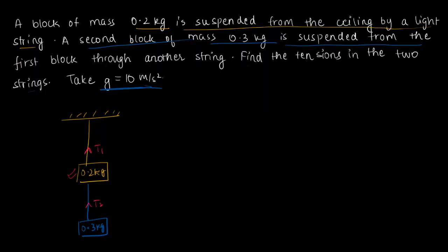Now if you take the first block and magnify it a bit, on this 0.2 kilograms block you have a force T1 acting that's stretching the first rope. You have a force T2 acting that's the stretch from the second string.